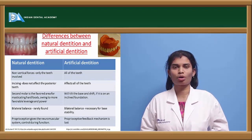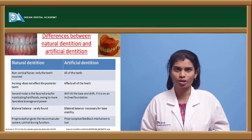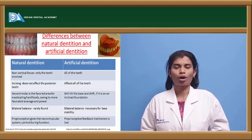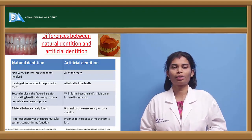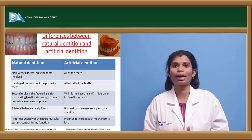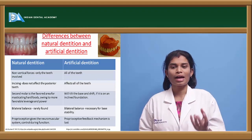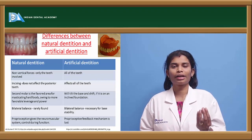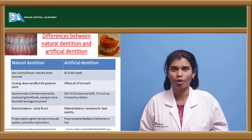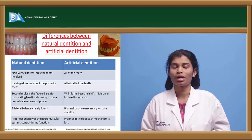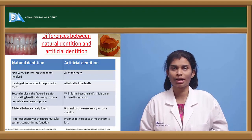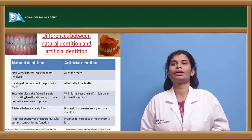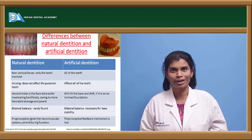Non-vertical forces on natural teeth are taken up individually. If there is any angular force or any force other than those parallel to the long axis of the teeth, these natural teeth acting independently can take up any kind of non-axial forces. But in artificial dentition, if there are any non-vertical forces, there will be slippage and dislodgement of the dentures.